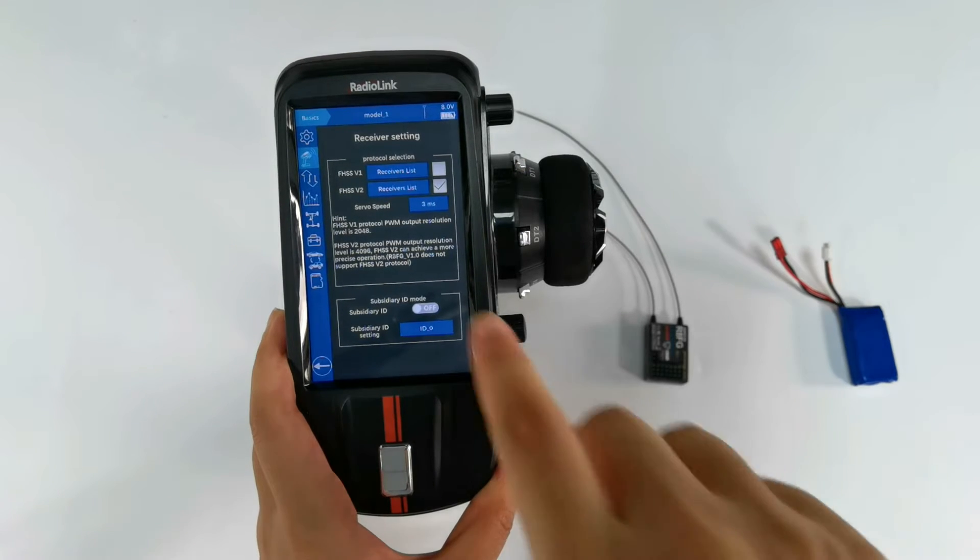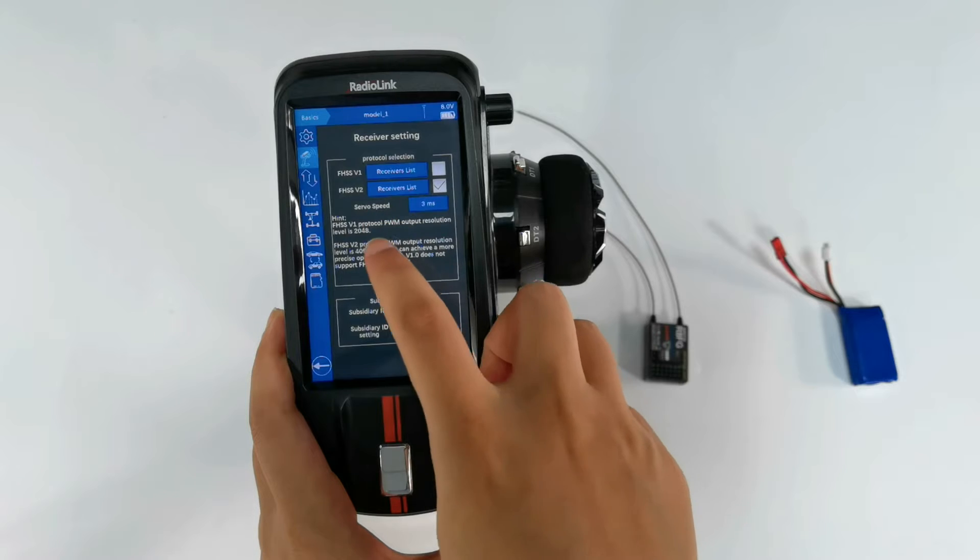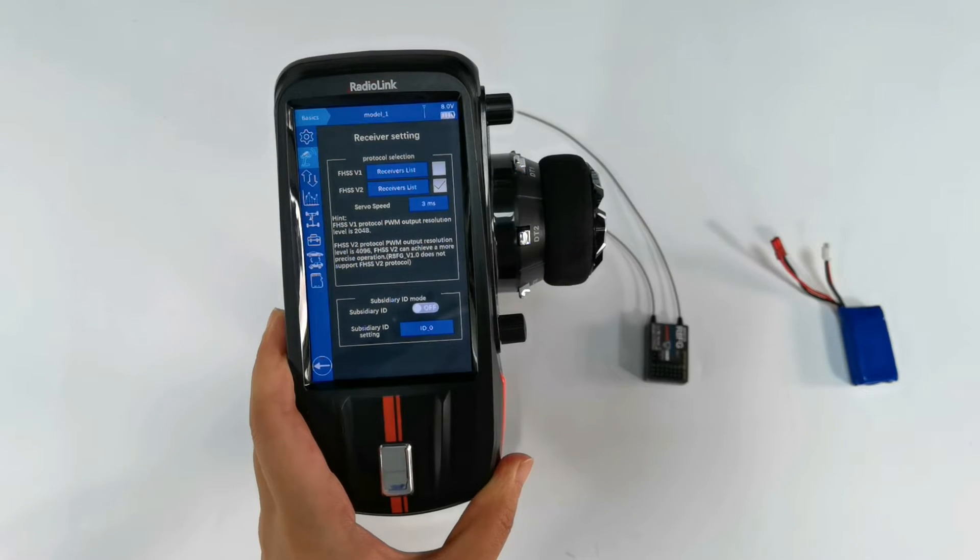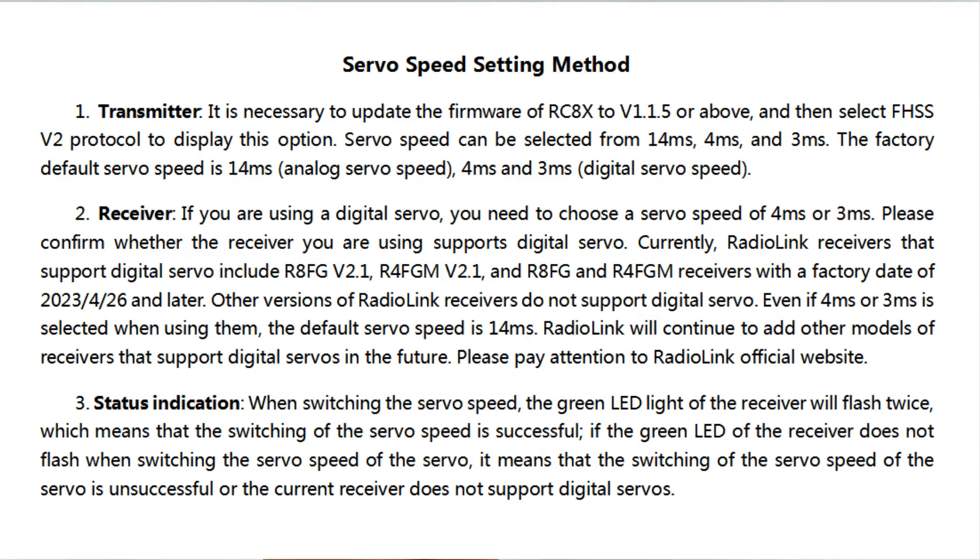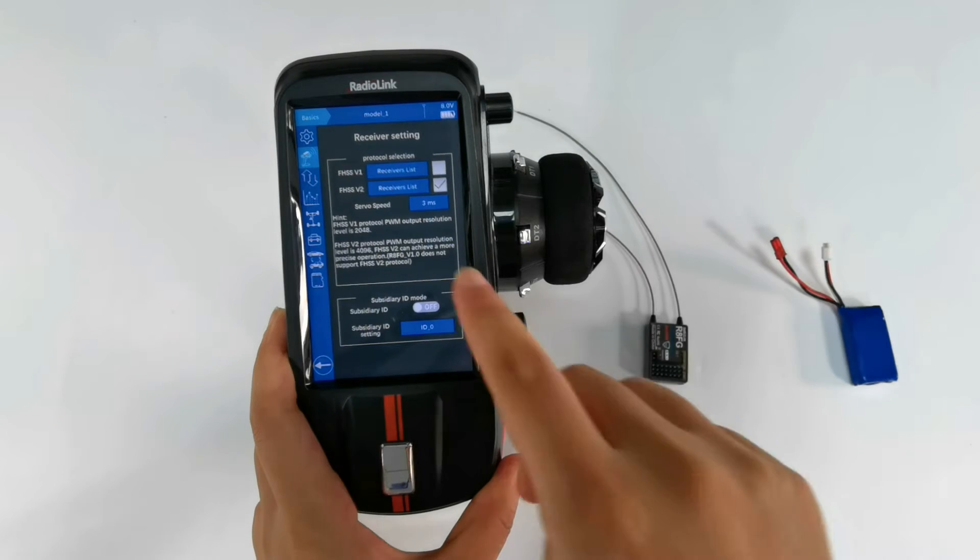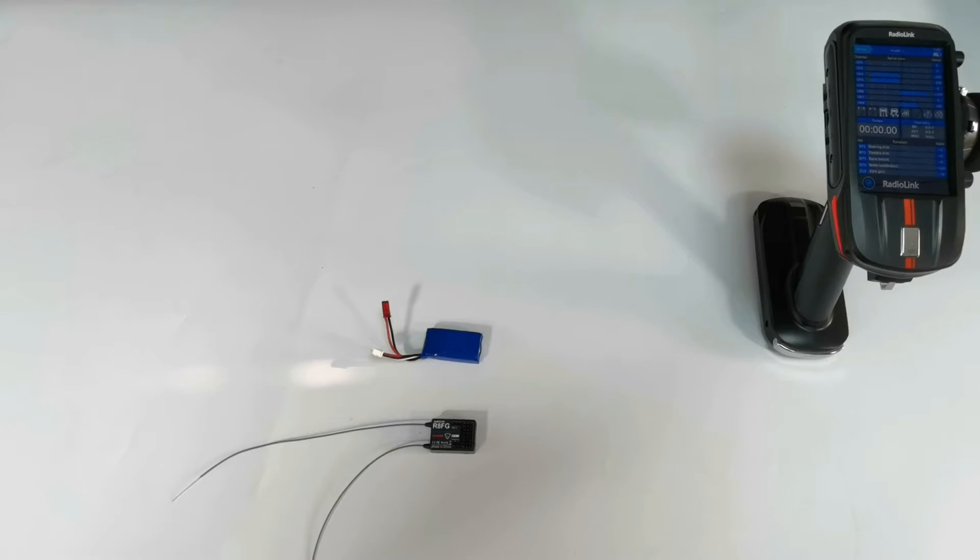When FHSS v2 protocol is selected, servo speed will appear on the screen. Here is the setting method for servo speed. After the protocol is selected, bind the power on receiver.